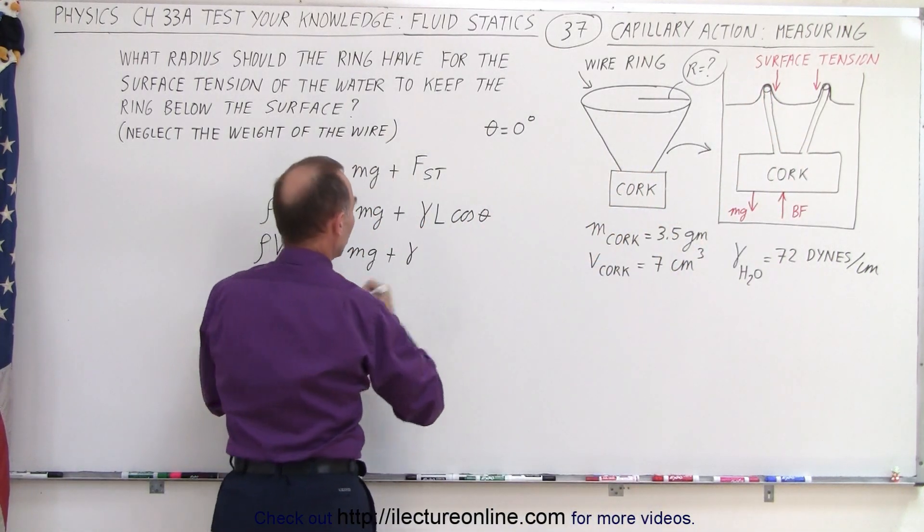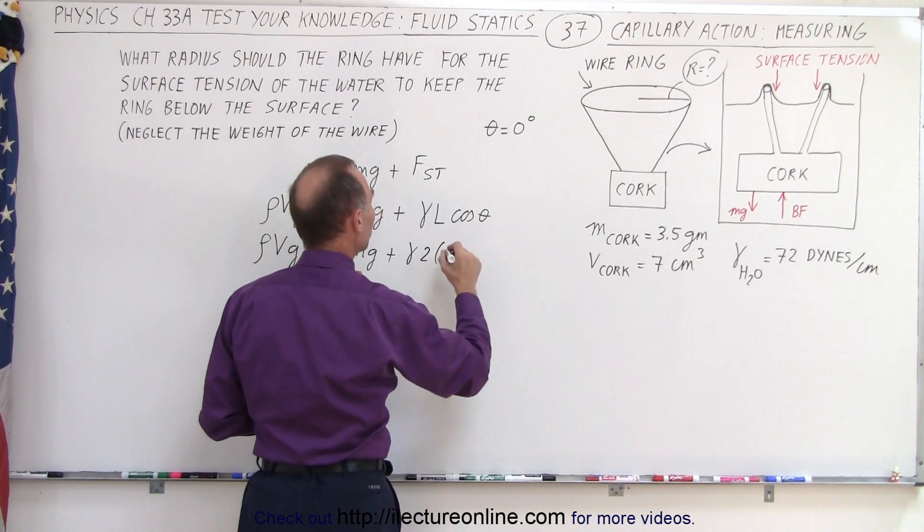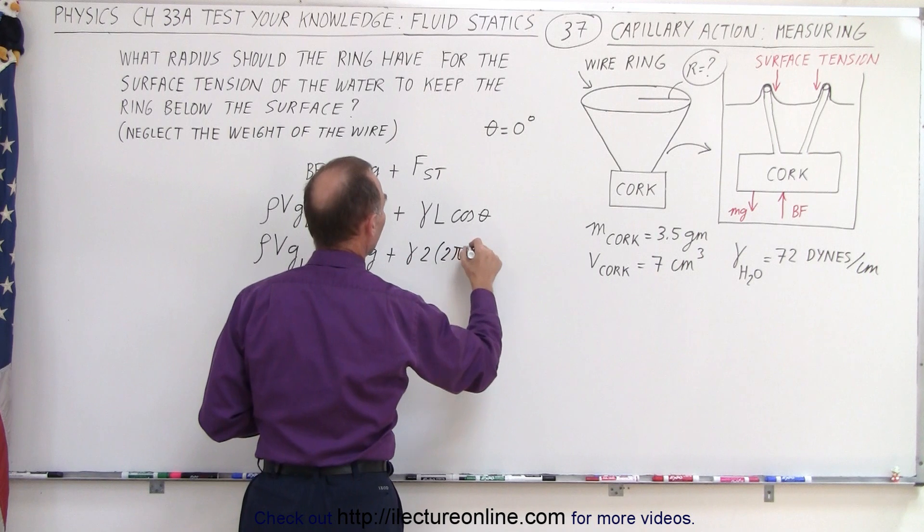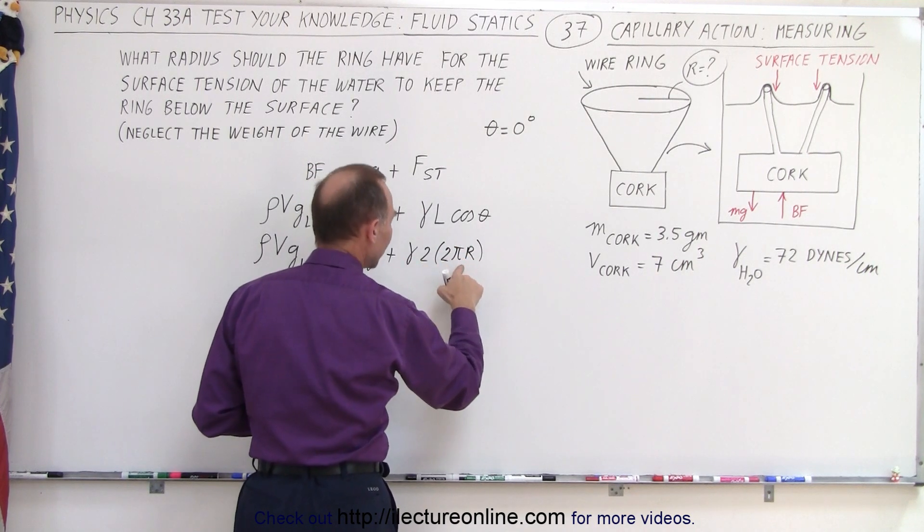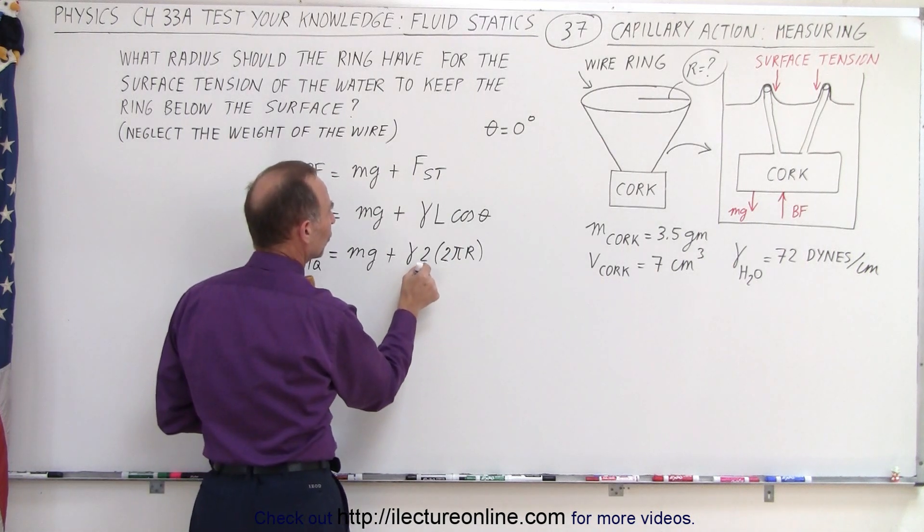So we have to take twice the circumference of the wire, which will be 2 times 2πr - not squared, twice the circumference which is 2πr.